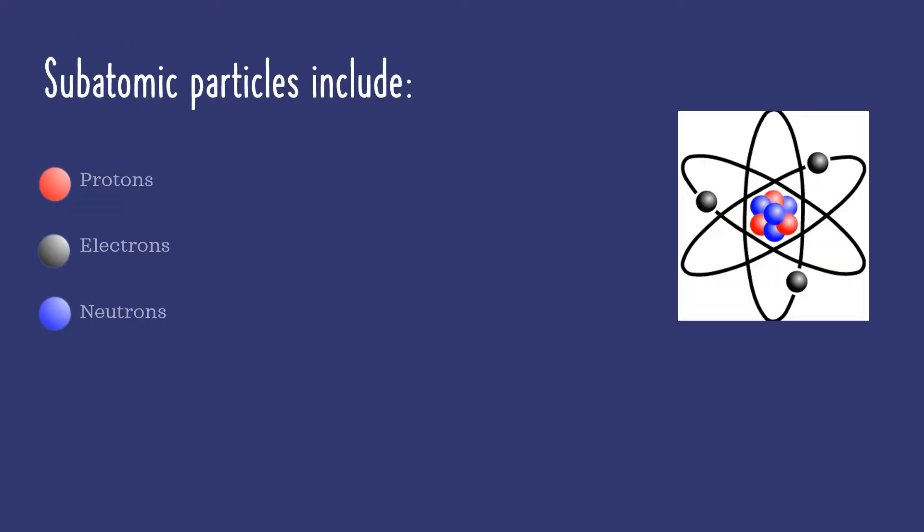Physicists have discovered many subatomic particles, but the three that biology learners must remember are protons, electrons, and neutrons. Here's why.